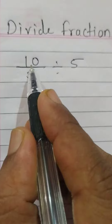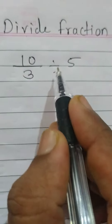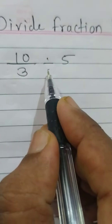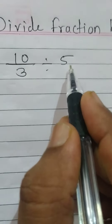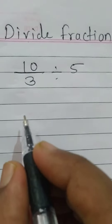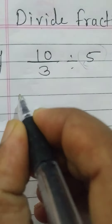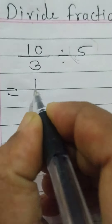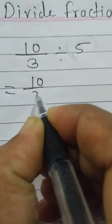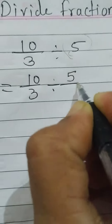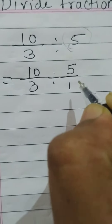For example, (10/3) divided by 5. First, we write the whole number in the form of a fraction: 10/3 divided by 5/1. We only write the numerator and convert it into a fraction.